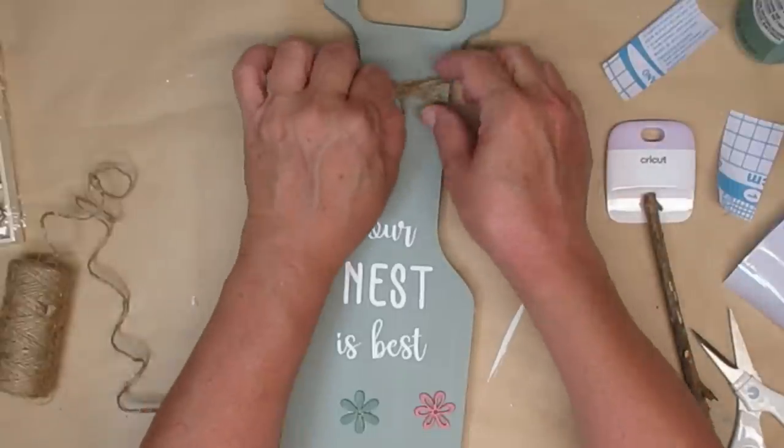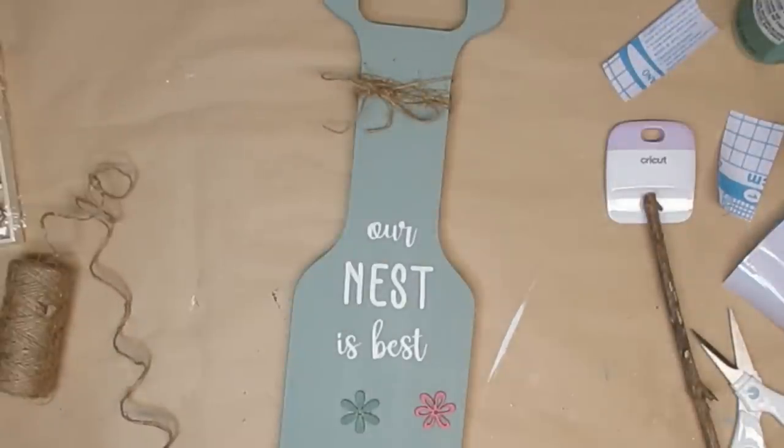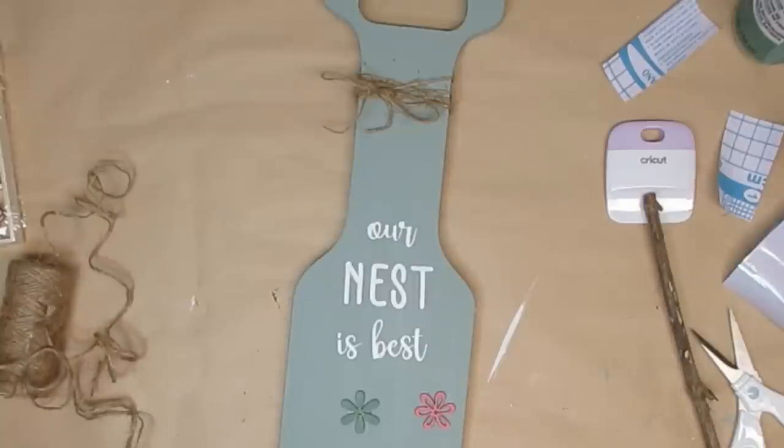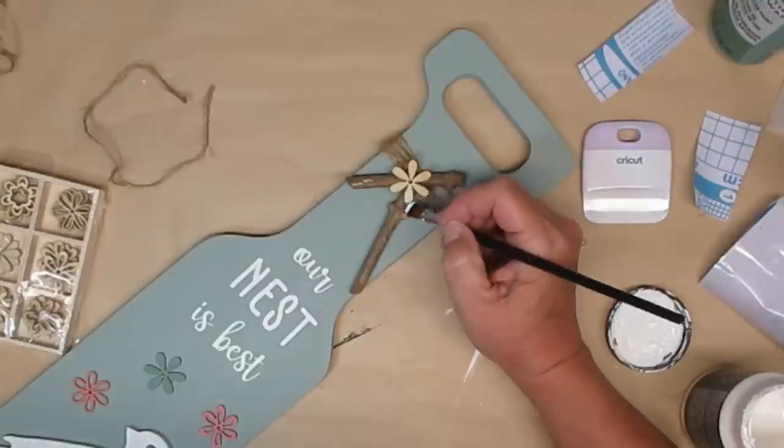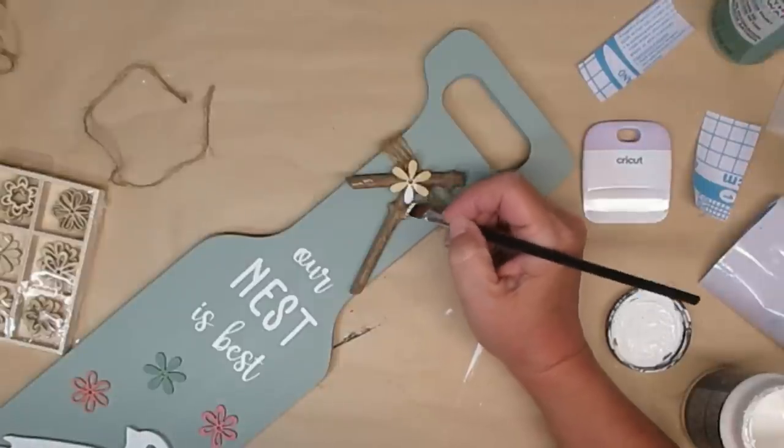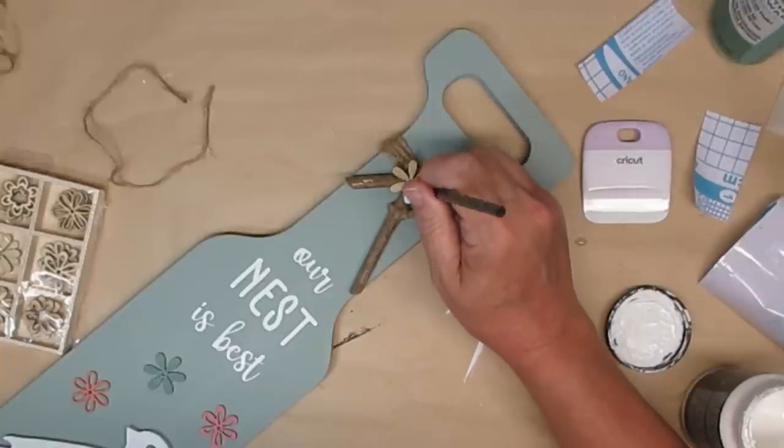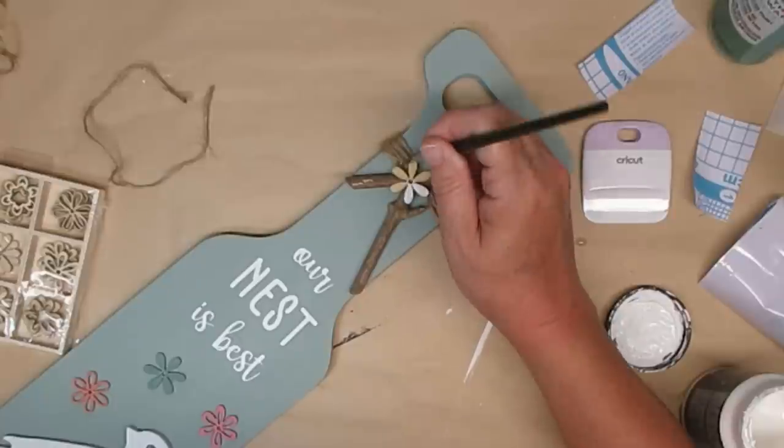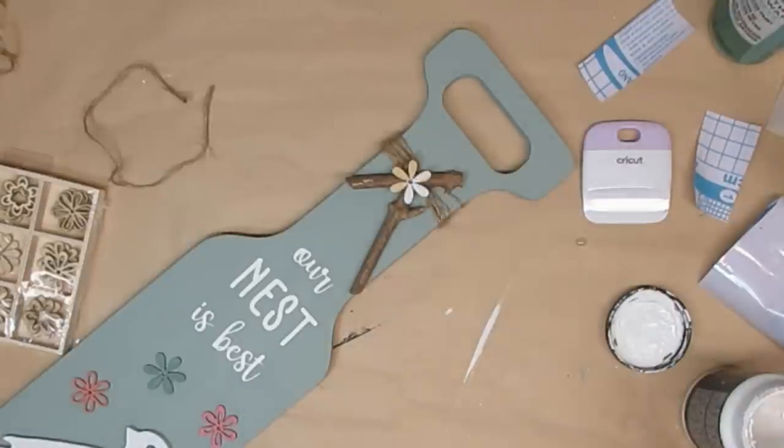I wrapped some twine around the top and decided not to use the bow. I also grabbed some of this pink gingham ribbon and I thought it was way too bright to add anything of that into it. So what I ended up doing is cutting off the bow and adding a few more of these little sticks that I picked up from my garden and just adding that to the top along with one more of the wooden flowers painted white.